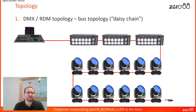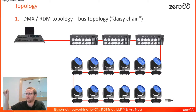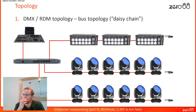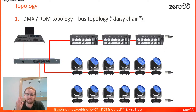Topology is just a term for how we're wiring up the system. This is the DMX topology — we probably know it as daisy chaining. The official term is a bus topology: you come out from the desk, go into the first product, out of that into the next one, all the way around until the end where you have that DMX terminator. You could also use a DMX splitter to run separate cables to your dimmers and lighting bars, but then you need terminators on each of those chains.